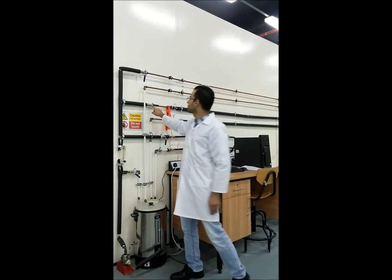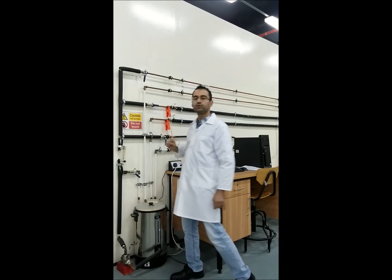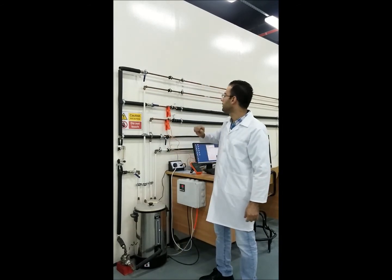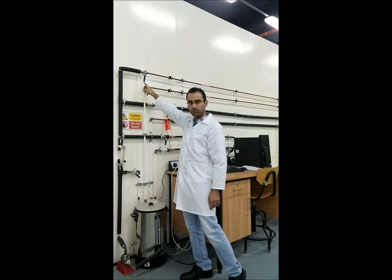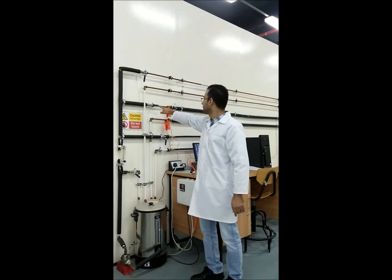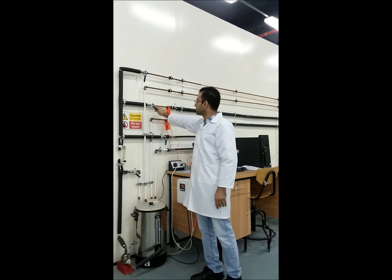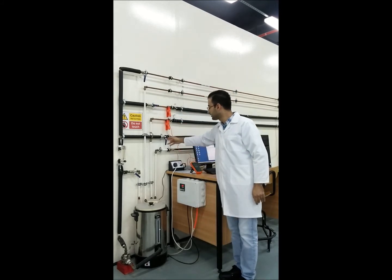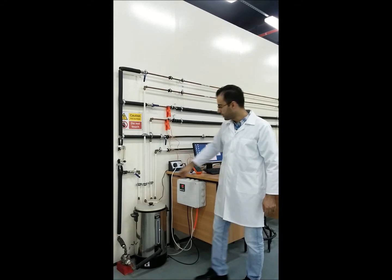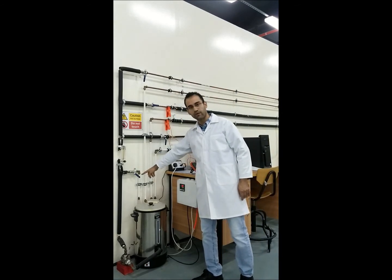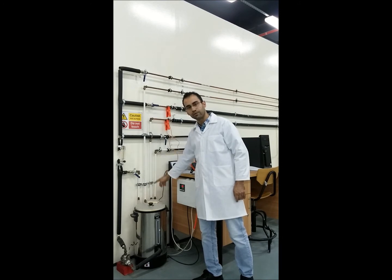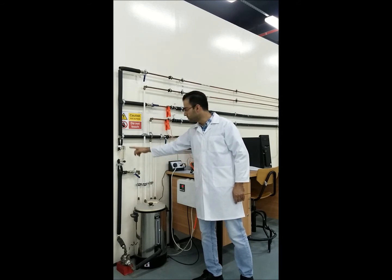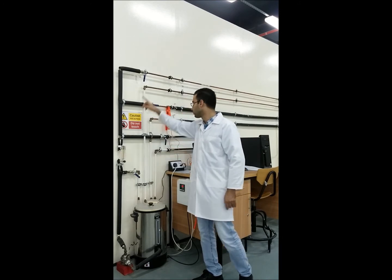Using these valves we can decide to which loop the water is going. For example now the unlagged pipe is switched off or closed and the lagged pipe is on and the finned pipe is off. This fourth valve is basically circulating water from the boiler to the boiler to reduce the pressure and the flow through the pipe.